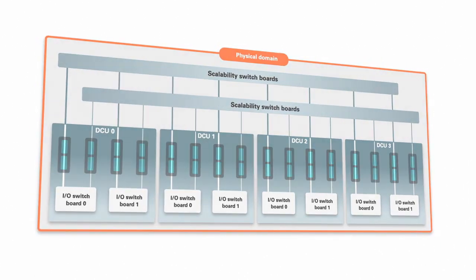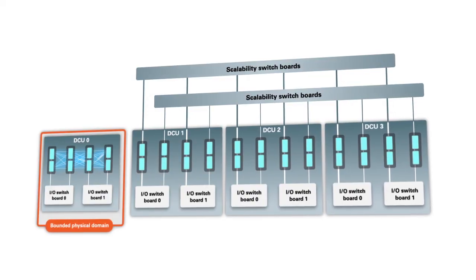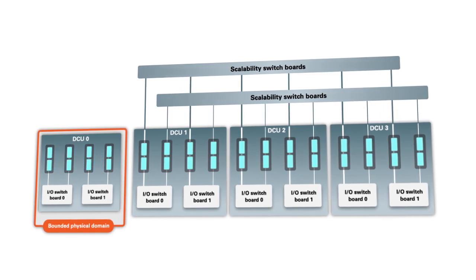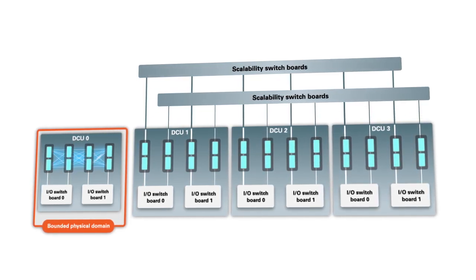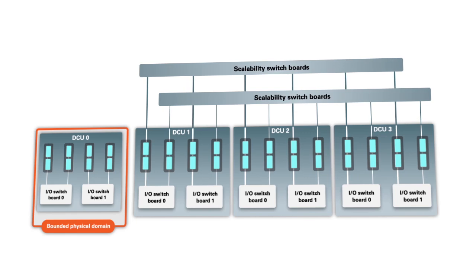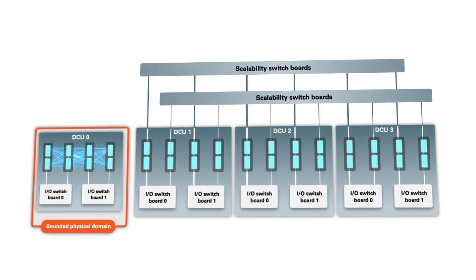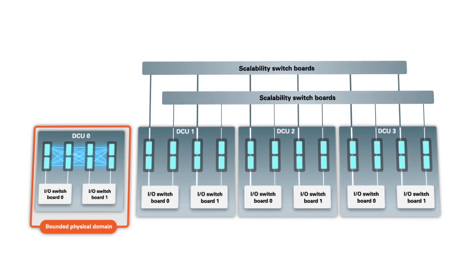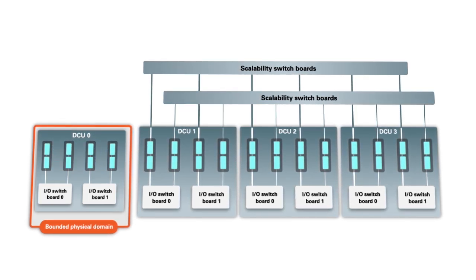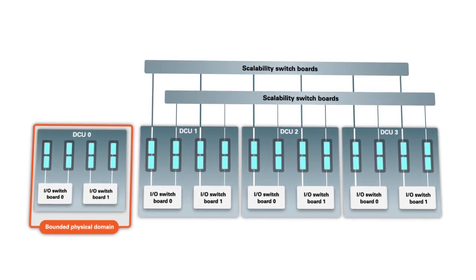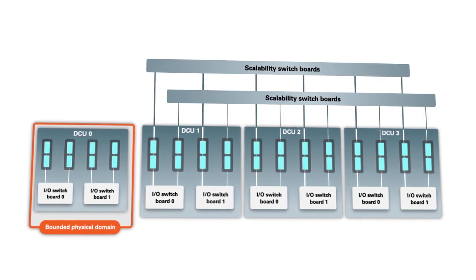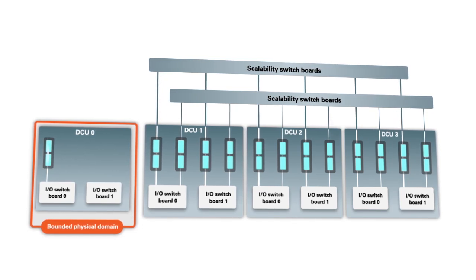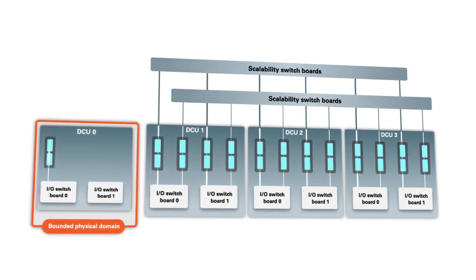A bounded physical domain is a second type of physical domain available. Bounded physical domains do not access the global interconnect provided by the scalability switchboards, so they provide increased hardware isolation from the other physical domains in the server. Bounded physical domains also accommodate additional hardware configurations — for example, a bounded physical domain can operate successfully with only two processors, where regular physical domains require at least four processors.